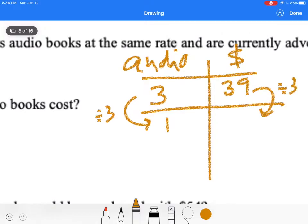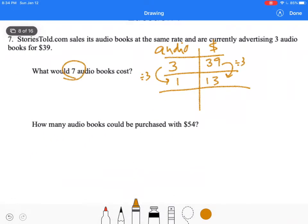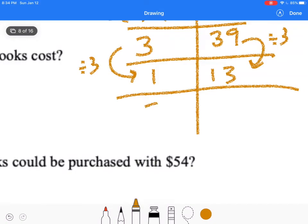So that means each book costs $13. So then it says I need to figure out seven audiobooks. So I put the seven here. One times seven is seven. Thirteen times seven is $91.